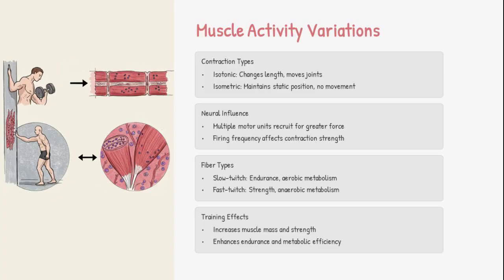Muscle performance varies. Isotonic contractions move joints, while isometric contractions hold positions. Recruitment of motor units and how fast they fire changes force output. Different fibers serve different roles — slow twitch fibers handle endurance, while fast twitch fibers specialize in power. Training enhances both strength and efficiency.